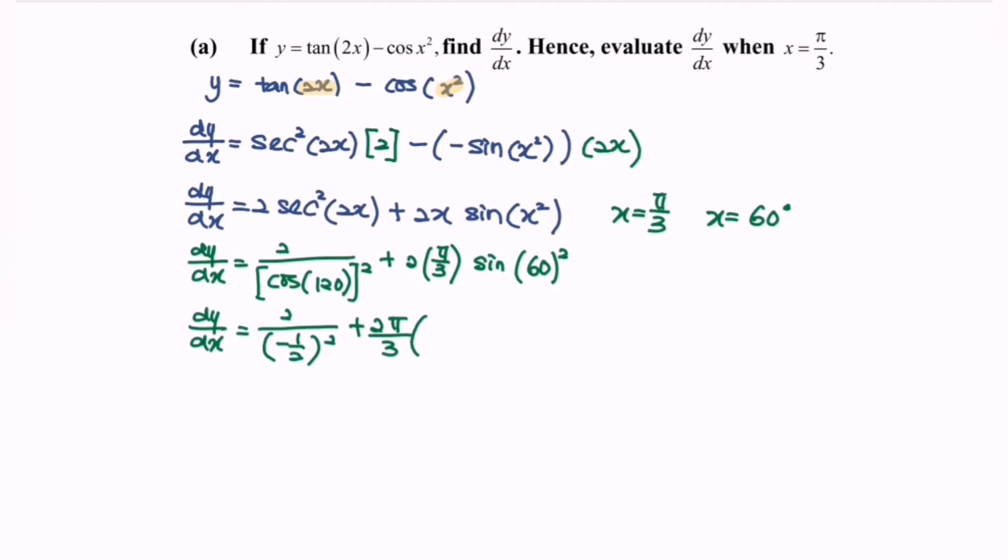...multiply with sin(60°) square. So if you press the calculator 60 square and then insert the angle into sin, we will obtain 0.